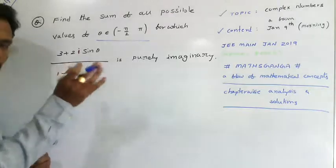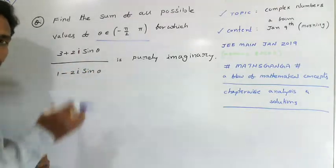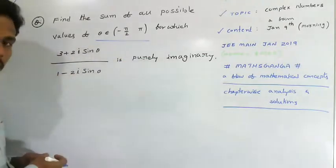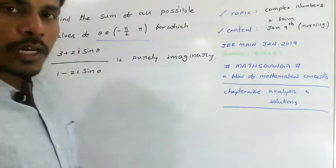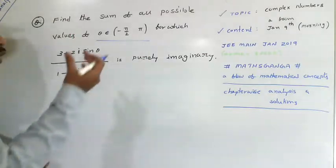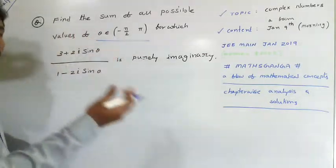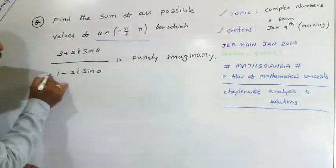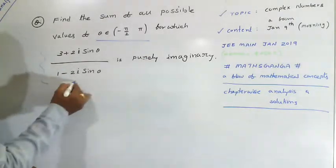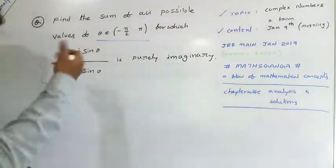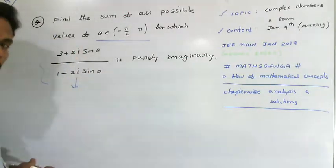Since it is purely imaginary, if we convert this to the form of a complex number — real part plus imaginary part — we need to equalize the real part to zero. From there we locate the values of theta. Initially, I am going to multiply both numerator and denominator by (1 + 2i sinθ).